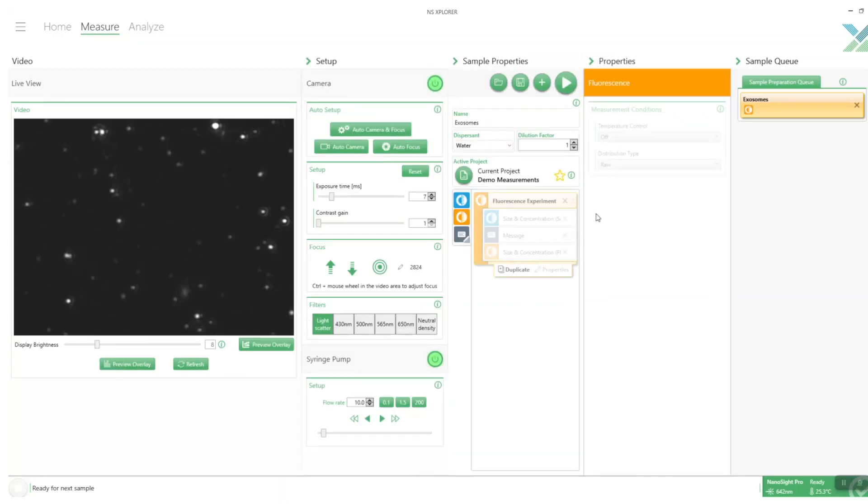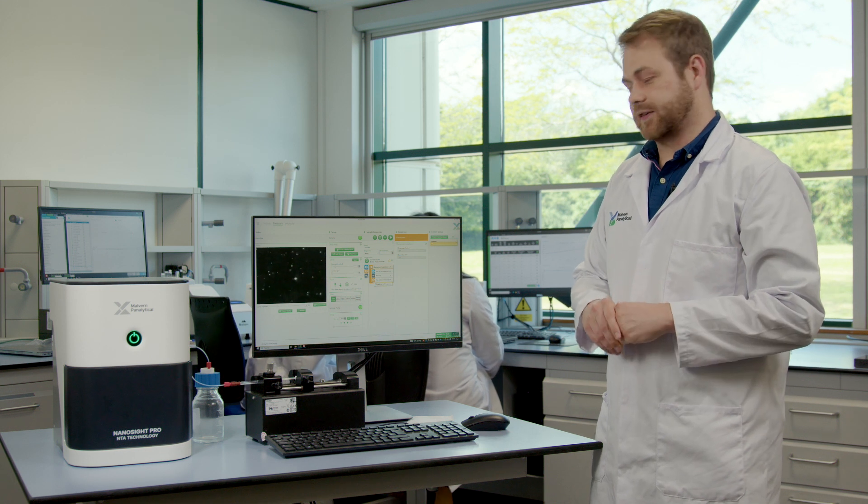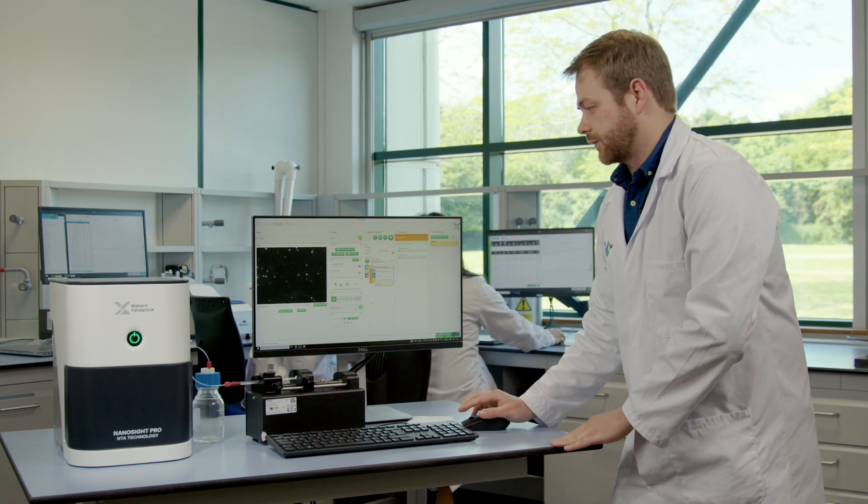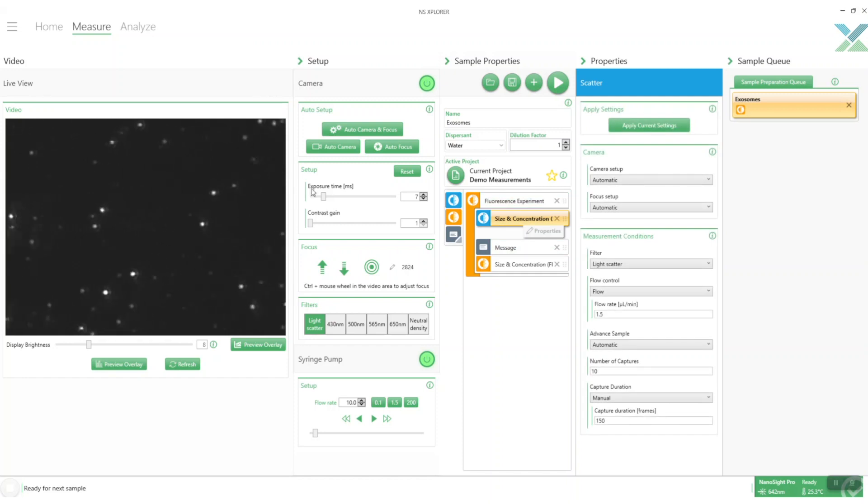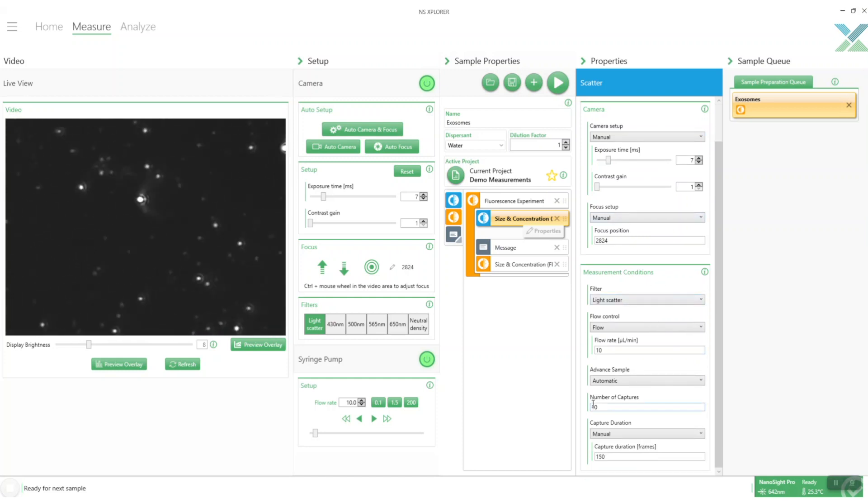We can create this here and what this gives us is a new measurement which already has the scatter and fluorescence parts built in. For the scatter part to set this up we've already got our settings here so we can just click apply current settings which gives us them all over here and I'm just going to lower the number of captures to keep the measurement shorter for this demo.